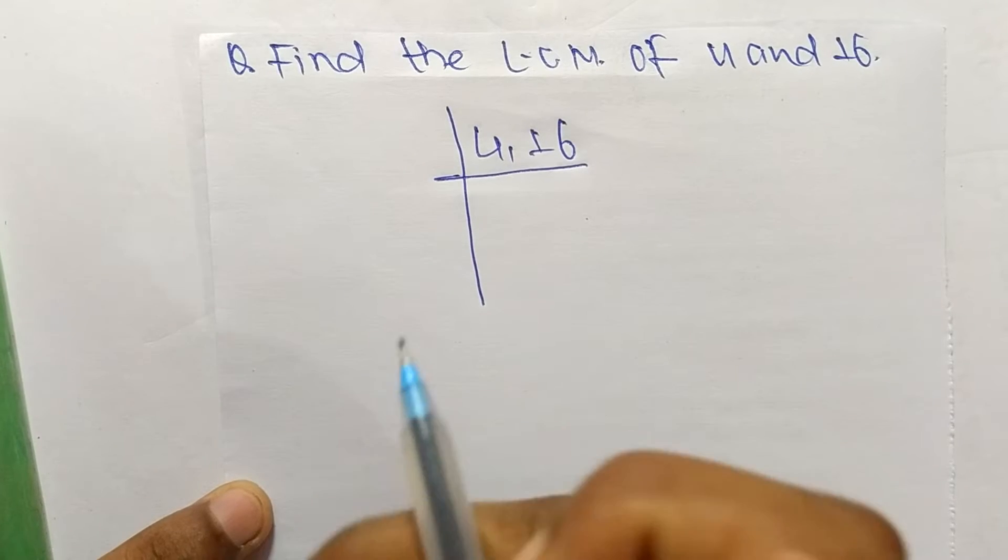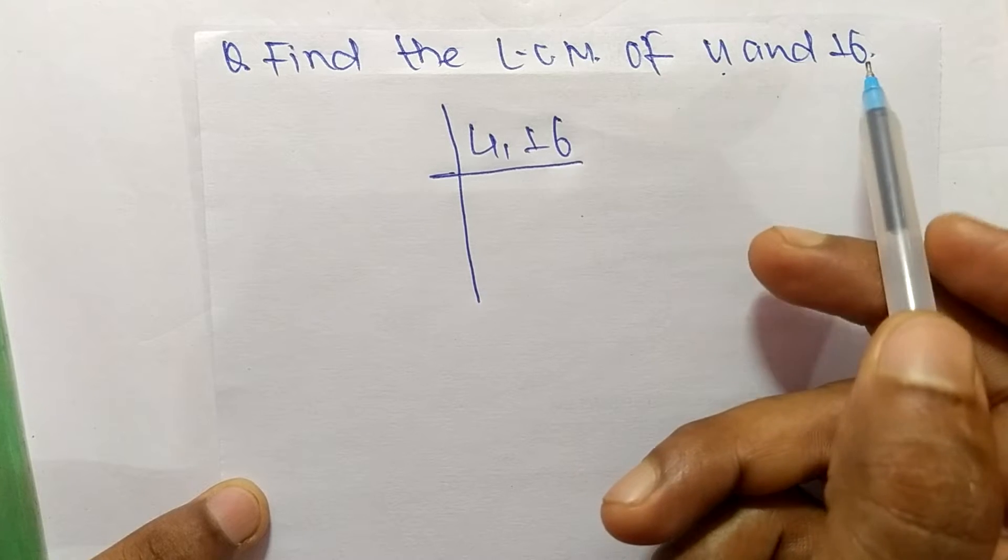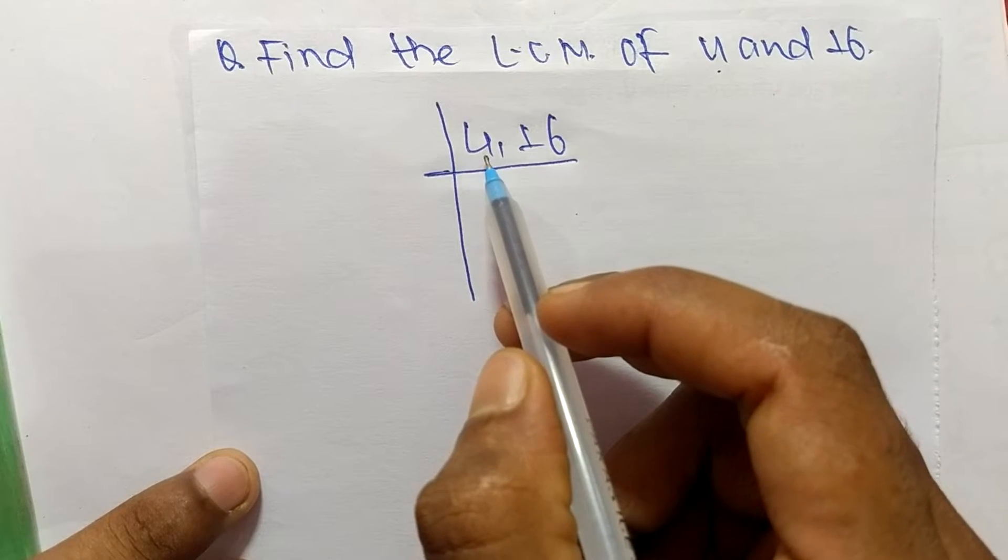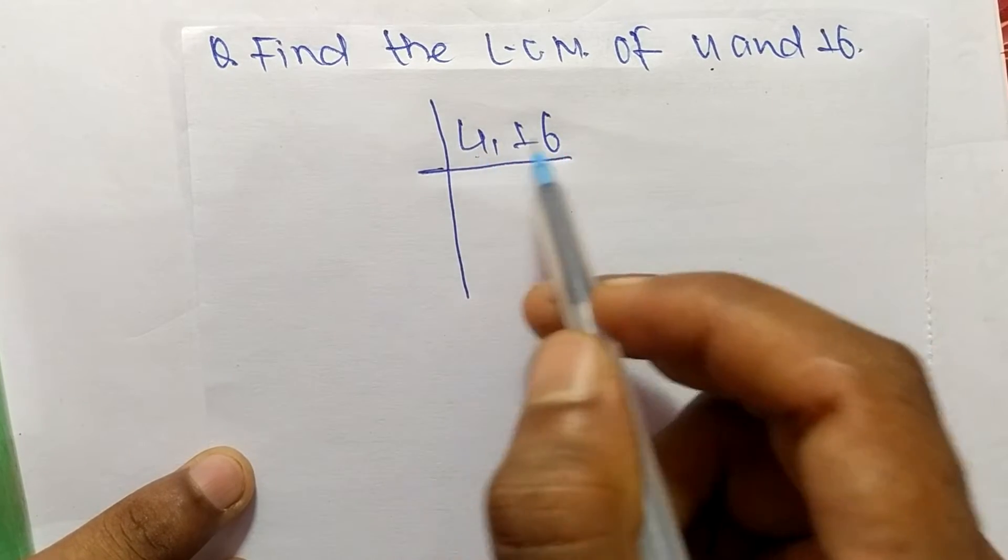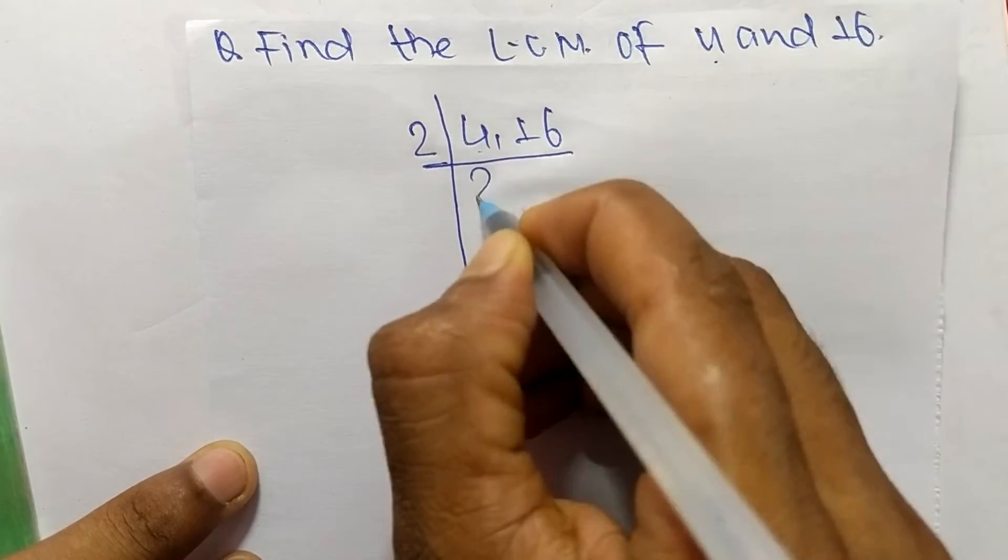Today in this video we shall learn to find the LCM of 4 and 16. First we choose the lowest number which can exactly divide both numbers. The lowest number is 2, so 2 times 2 equals 4 and 2 times 8 equals 16.